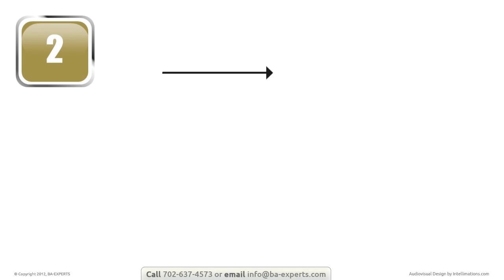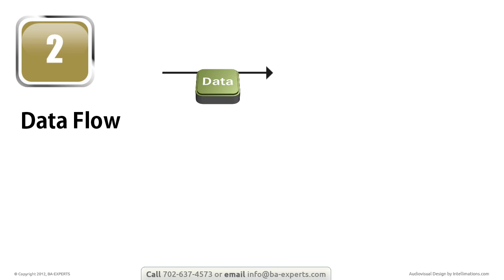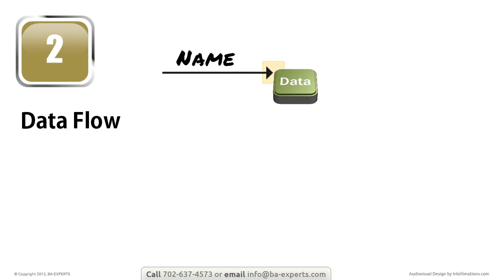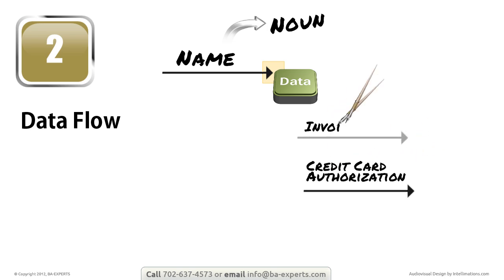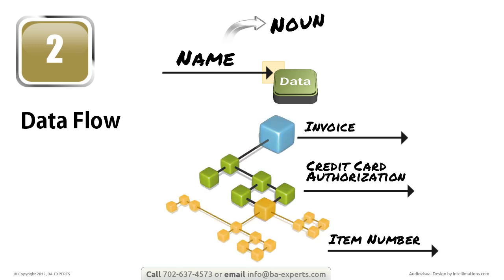An arrow represents a data flow, meaning information in motion. Because the data is going from somewhere to somewhere, the arrow points in the direction of movement. Every data flow has to have a name. Because it is data, and data is a thing, the name is a noun with appropriate modifiers — for example: credit card authorization, invoice, item number. As with the process, the named data flow can be at any level of detail.